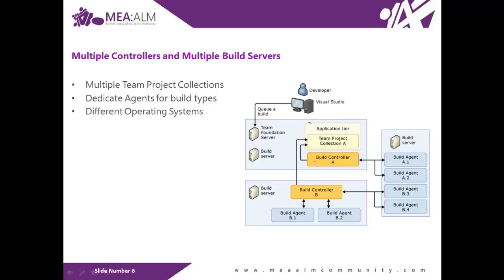About 90% of the time, you'll have another team project collection and a controller targeting that collection. So instead of this single line, you'll have separate team project collections — one build controller targeting collection A and another targeting collection B. This server with build agents B3 and B4 will be building code for team project collection B, while this controller and these two build agents will be building code for team project collection A.